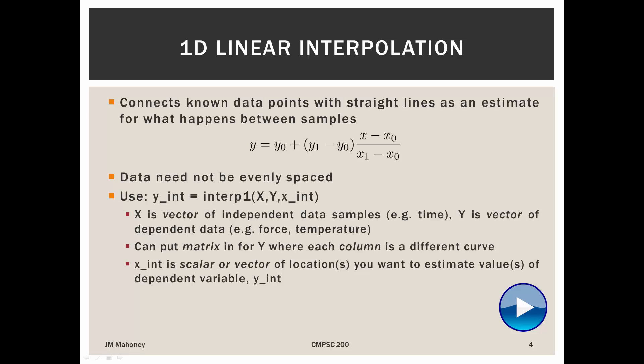Now, this x underscore int does not have to be a scalar value, it can be a vector of values as well. So if we want to make a lot of estimates, interpolate between a lot of values, then we can put a vector in for x_int. And then we're going to get out a vector of values that corresponds to our estimates of the dependent variable at those independent variable locations.